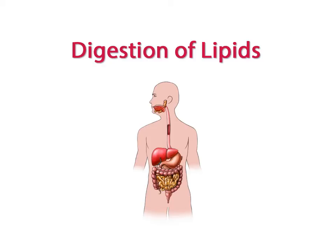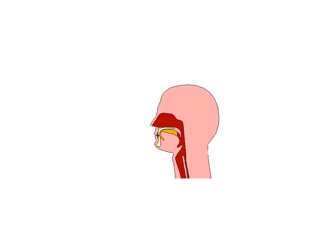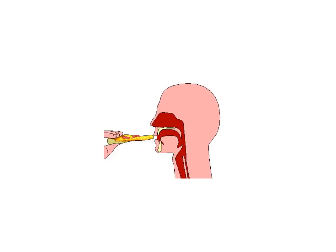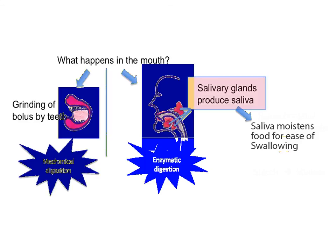In this video we will follow the digestion of lipids from the mouth through to the small intestine. The physical digestion of lipids begins in the mouth as the lipids are chewed, breaking them down into smaller pieces. This is important to create more surface area for digestive enzymes to work on. Saliva is secreted from the salivary glands into the mouth and combines with lipids to moisten the food for ease of swallowing.